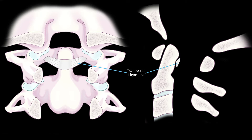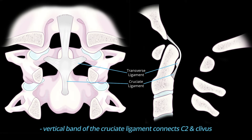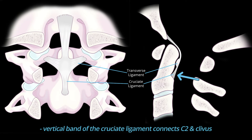The transverse ligament actually forms the horizontal component of a cross-shaped cruciate ligament. The more vertical band of the cruciate ligament connects the body of C2 to the clivus. If we look on the sagittal view, you can see the longitudinal band of the cruciate ligament extending from the clivus to C2.